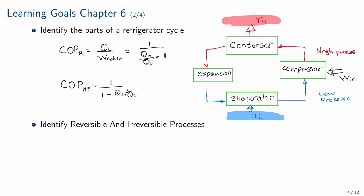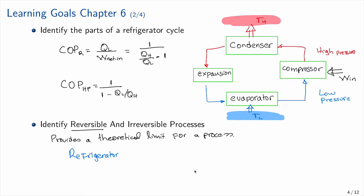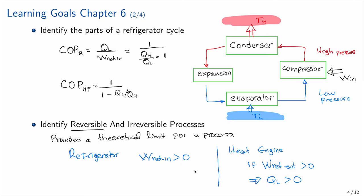To identify reversible and irreversible processes: irreversible processes are, in general, all processes that occur in nature. Reversible processes provide the theoretical limit for a process. In a refrigerator, the net work input is always positive — we always need work input to refrigerate, so W_net_in > 0. For a heat engine, W_net_out > 0, but we always release some heat to the low-temperature reservoir, meaning we can never achieve 100% efficiency.